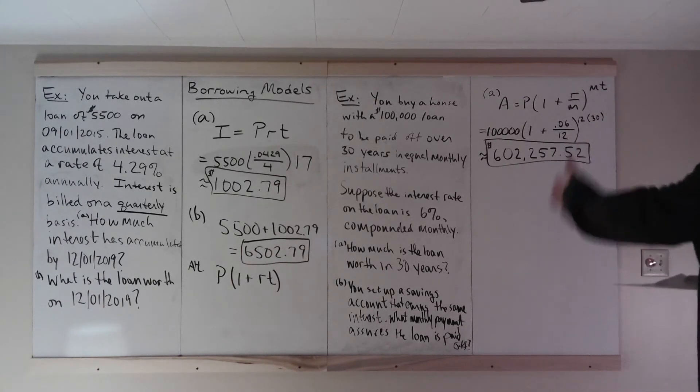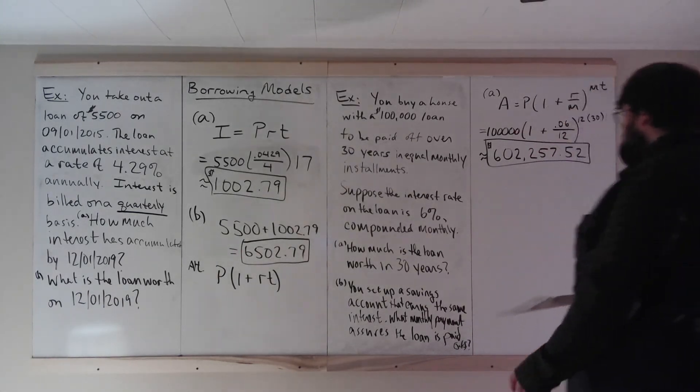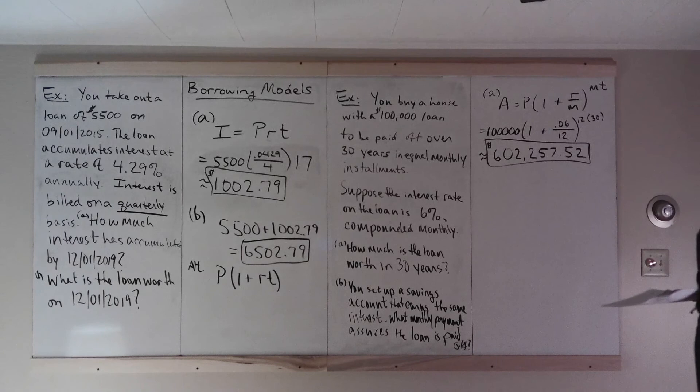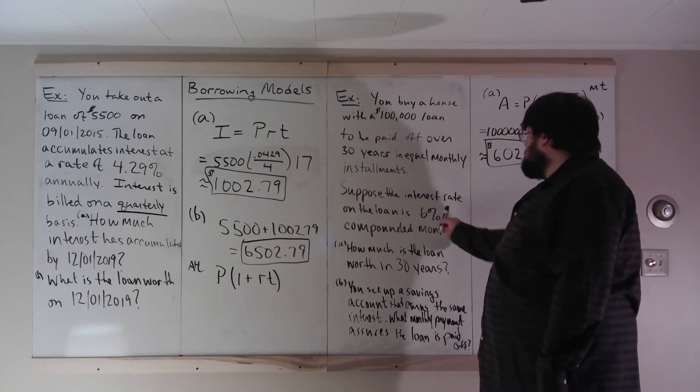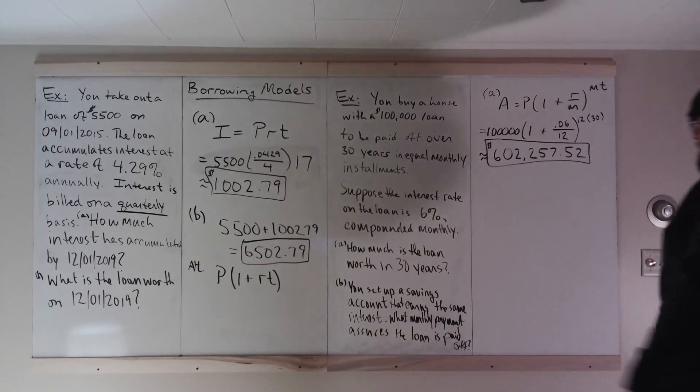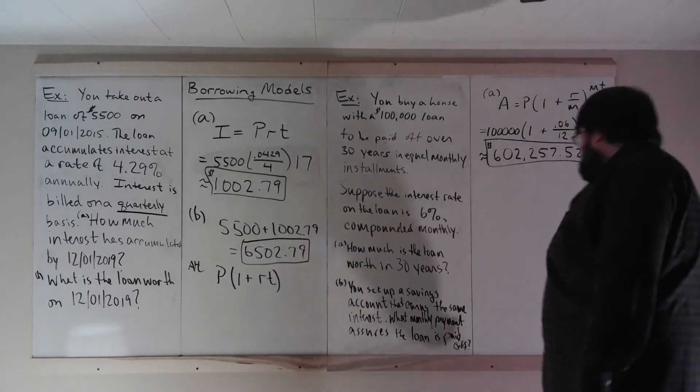But you're in this situation, you're buying a house, you notice that you can set up a savings account that earns the same interest. So you can set up a savings account that earns the same interest, meaning 6% annual interest compounded monthly, on the savings account. And we're asked here, what monthly payment, into the savings account, so what monthly deposit, assures that the loan is paid off. I didn't write it at the end of those 30 years. I should have said at the end of those 30 years. I didn't have much space there.